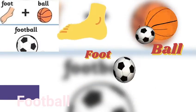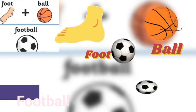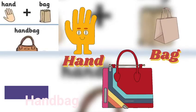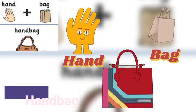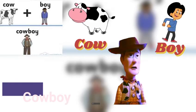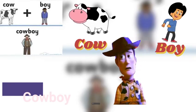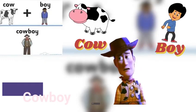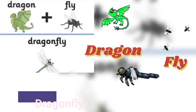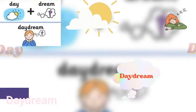'Rain' is one object, 'coat' is the second object — you connect them into 'raincoat'. 'Foot' is one object, 'ball' is the second object — you connect them into 'football'. 'Hand' is one object, 'bag' is the second object — you connect them into 'handbag'. 'Cow' is one object, 'boy' is the second object — you connect them into 'cowboy'.